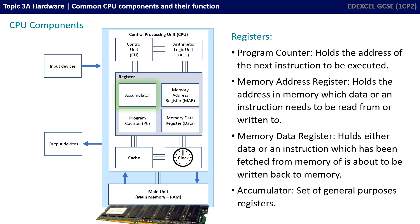And finally, the accumulator. This is actually a set of general purpose registers which the CPU can utilize for different functions. Temporary values may be stored here before being written to and from memory. Depending on the CPU architecture, there may be a different number of registers in the accumulator.